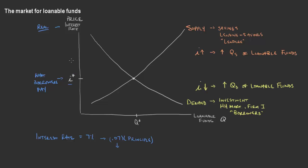As the real interest rate increases, the supply would increase; however, the demand would decrease. And if that price were to go down, the supply would be a little bit lower because individuals who are lending get less in return, whereas individuals who would be borrowing money would have a lower price to pay, so they would want to borrow and invest even more in the economy. We can see those two competing incentives going at each other within this market, and so we would have some sort of equilibrium point as well.